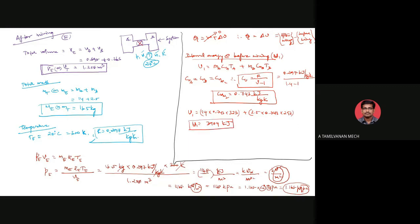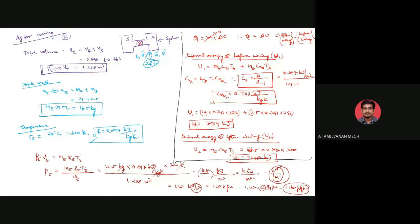Internal energy after mixing U2 equals ME times CV times TE. That is 16.5 kg times 0.743 kilojoule per kilogram Kelvin times 300 Kelvin. So U2 equals 3677 or approximately 3678 kilojoule.